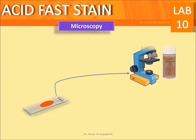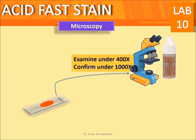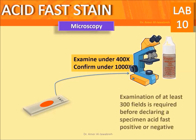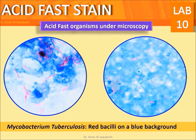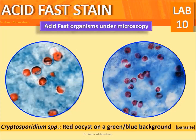Examine under 400X and confirm under 1000X. Examination of at least 300 fields is required before declaring a specimen acid-fast positive or negative. Mycobacterium tuberculosis appears as red bacilli on a blue background. Cryptosporidium species appears as red oocysts on a green or blue background (parasite).